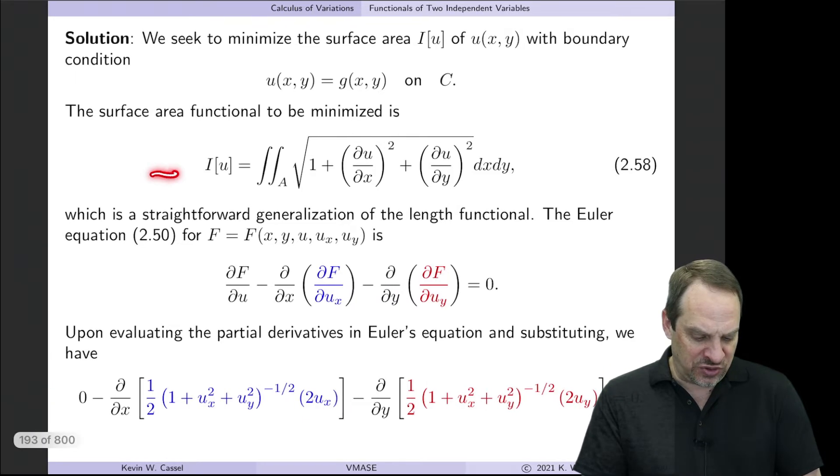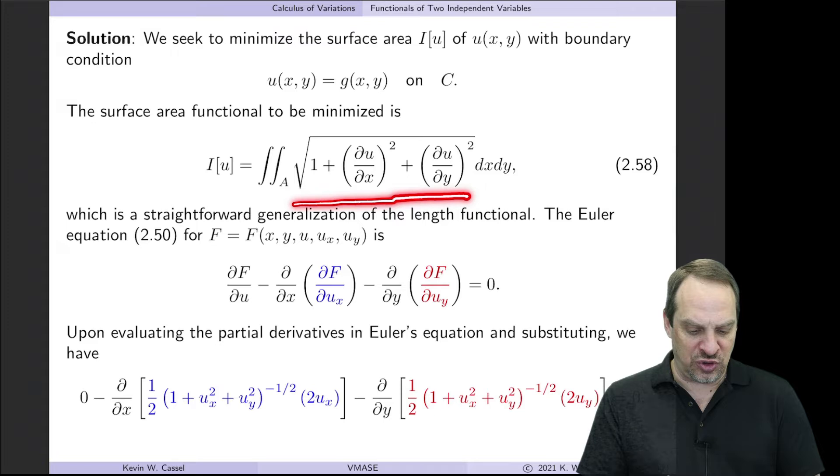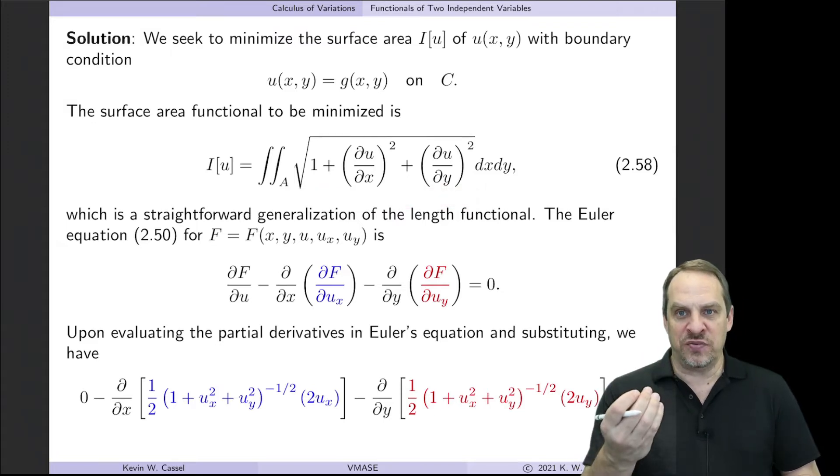I'm going to give you the functional that is to be minimized. It's the square root of one plus the square of partial u partial x plus the square of partial u partial y. And for that given functional, so that's step one, let's get the Euler equation.